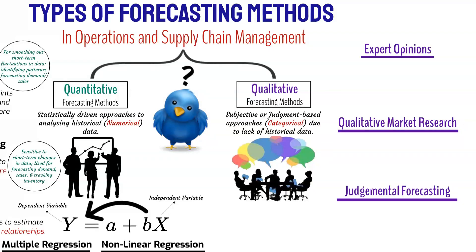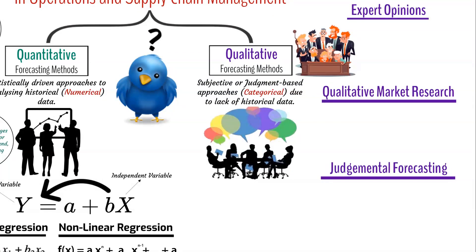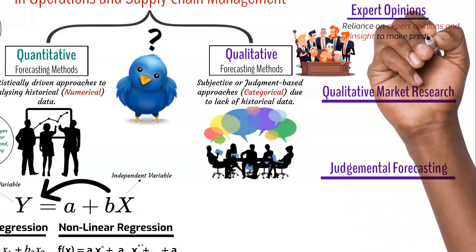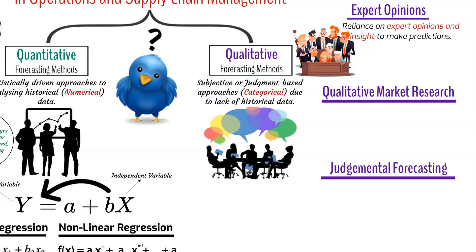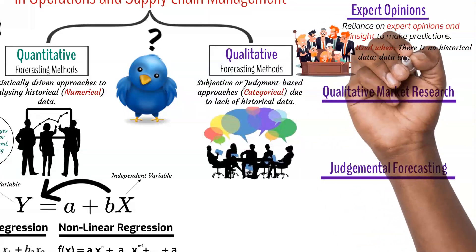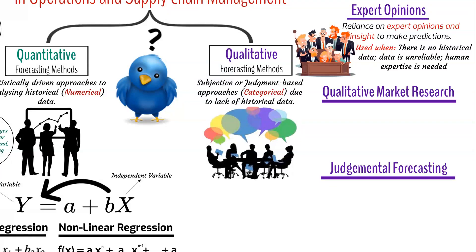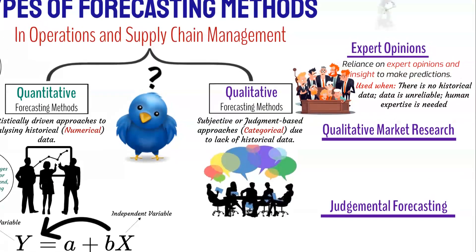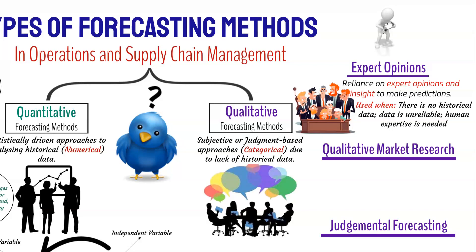Expert judgment in qualitative forecasting requires reliance on the insights, opinions, and experience of experts within an organization or industry to make predictions about future events or trends. In the context of operations and supply chain management, expert judgment is valuable when historical data is limited, unreliable, or when there is a need to incorporate human expertise into the decision-making process. Examples of its application include predicting demand for new products with no historical sales data, anticipating the impact of geopolitical events on supply chains, and assessing the potential effects of disruptive technologies on production processes.